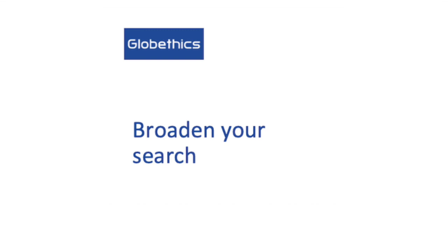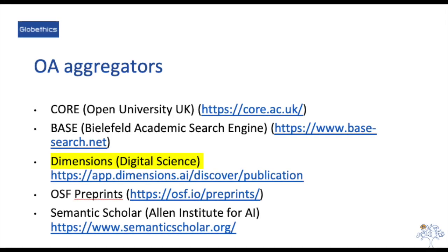Apart from these, you may want to know about other resources that cannot be found in our library. Here are some important open access databases you may want to use. In the open access aggregators, you may want to check the following: CORE (Open University UK), BASE (Bielefeld Academic Search Engine), Dimensions (Digital Science), OSF Preprints, or Semantic Scholar (Allen Institute for AI).